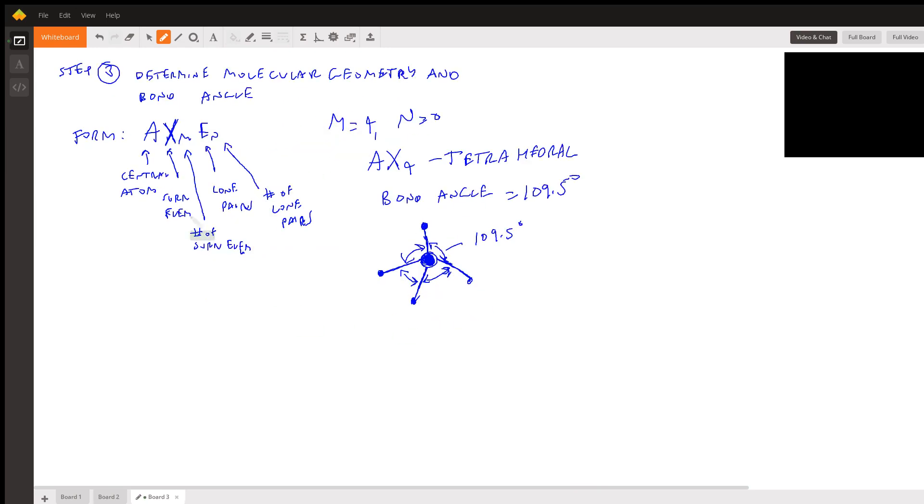And then the last step is step three, determine molecular geometry and bond angle. So the form for the molecular geometry is AXMEN. A is the central atom. X is the surrounding elements. M is the number of surrounding elements. E is the lone pairs. And then N is the number of lone pairs.